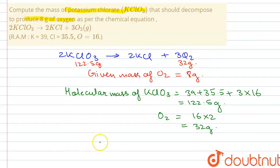It will be equal to 122.5 divided by 32 into 8. That is a unitary method. So we will get 30.6 grams of KClO3 will be required to produce 8 grams of oxygen. So that was the answer for the question.